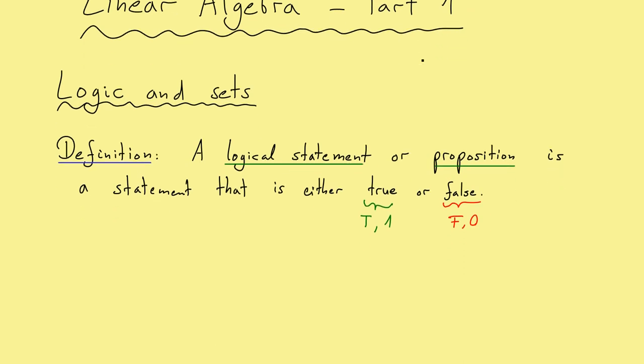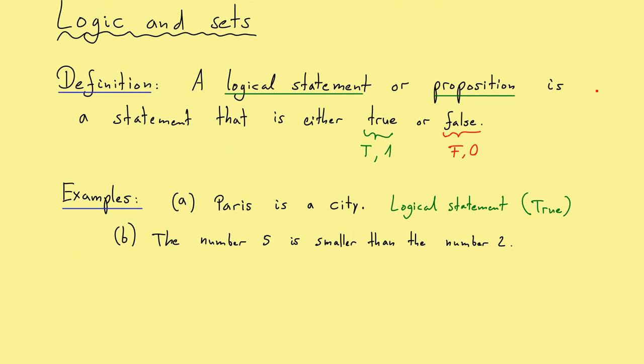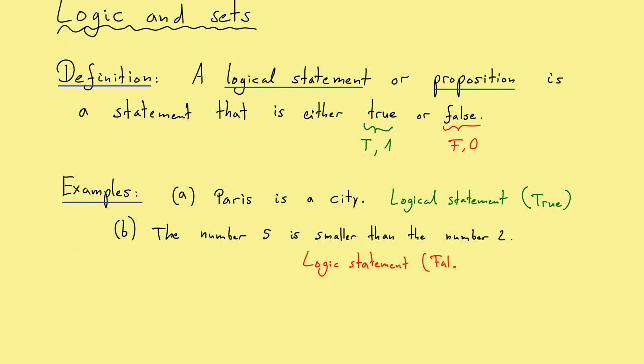So all statements we will have, all propositions, will have a well-defined truth value. Another problem we will have now is to give examples. Examples outside of mathematics, logical statements which I formulate using the English language, may have some problems of definition or ambiguous interpretation. However, if you allow some background knowledge we will find very good examples. For example, Paris is a city is a good logical proposition, and since we know what a city is, we can say this logical statement is a true one. Maybe next one is the number 5 is smaller than 2. This is a well-defined logical statement, but this one, as you all know, is a false one.